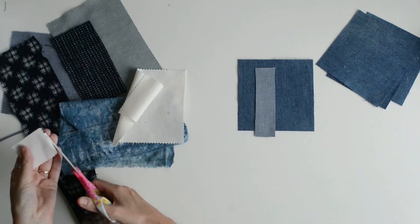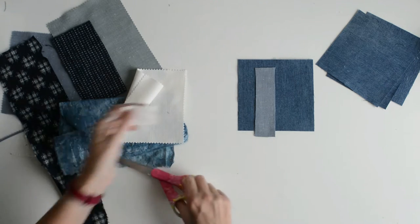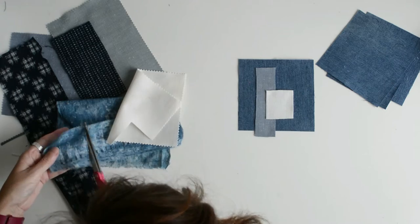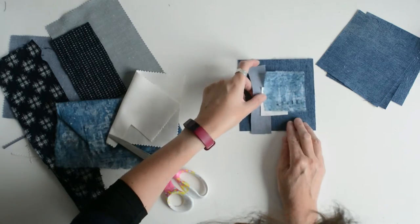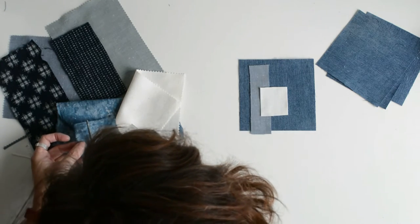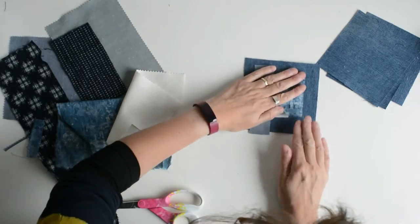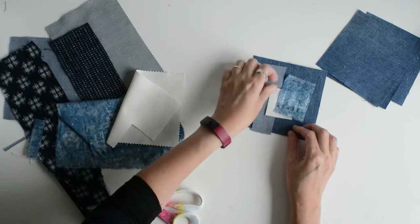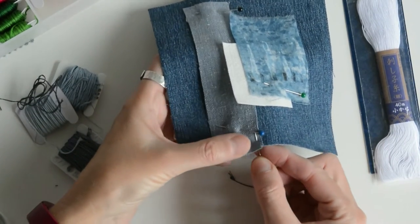As you can see, I'm not folding in under the raw edges. I'm just cutting them square. These will gradually fray on the coasters over time, but it's all part of the boro-inspired feel of the coasters. Remember you will have seam allowance around the edge of your denim. Once you create your design...